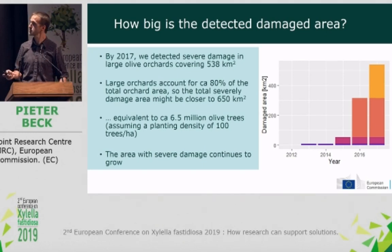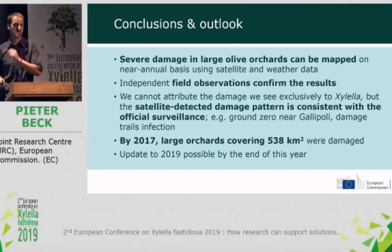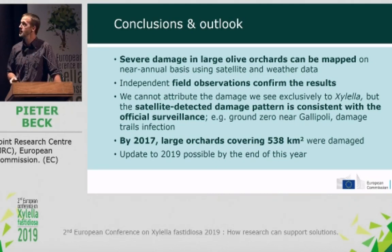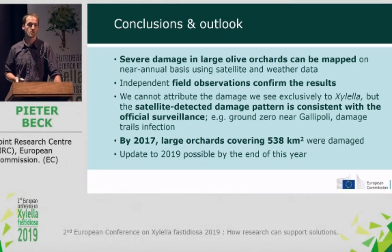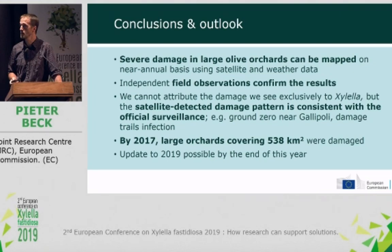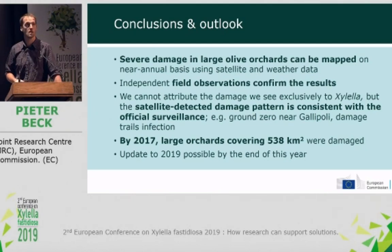In summary: we can map severe damage in large olive orchards using satellite data supported by weather data. Our results are confirmed by field observations from regional monitoring and plant pathologists — completely independent and not used in training the method. The pattern is consistent with official surveillance data: ground zero near Gallipoli, damage trails infection, and the spatial pattern is consistent. By 2017, we estimate that 438 square kilometers of large olive orchards had been damaged, and we foresee updating the analysis when weather data for 2019 becomes available in November. Thank you very much.